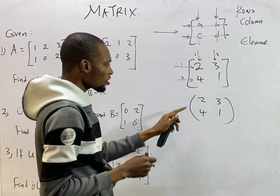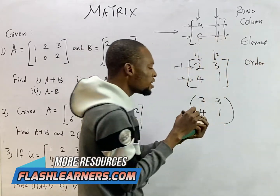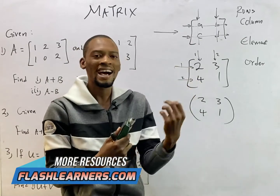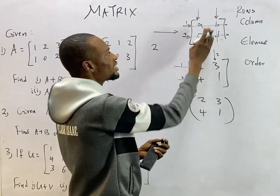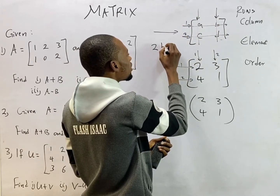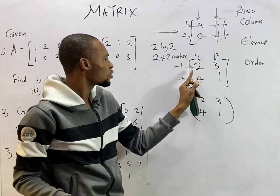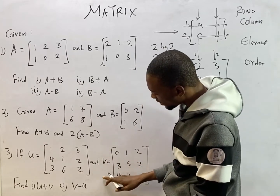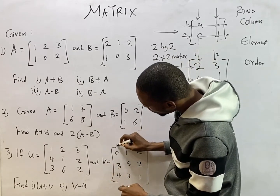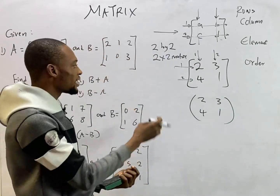There is something else you need to know — the order of a matrix. The order of a matrix is simply mentioning the rows then the columns. For example, this matrix has two rows and two columns, so this is a two by two matrix. But for something like this, we have three rows and three columns, so this is a three by three matrix.